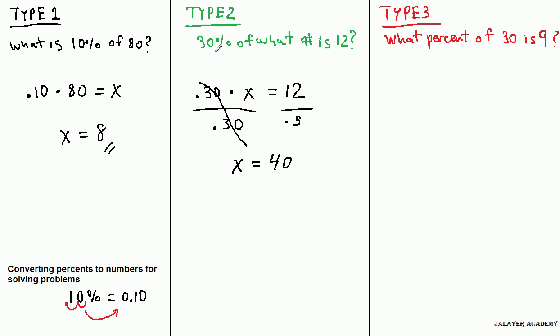So 30% of 40 is 12, and how can we check that? This now, in order to check this, this becomes a type 1 problem. So 40, 30% times 40. That would be, what is 30% of 40?